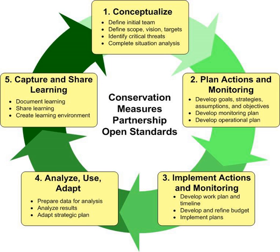However, a number of process failures related to information feedback can prevent effective adaptive management decision-making: data collection is never completely implemented; data are collected but not analyzed; data are analyzed but results are inconclusive; data are analyzed and are interesting, but are not presented to decision-makers; data are analyzed and presented, but are not used for decision-making because of internal or external factors.